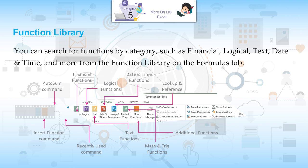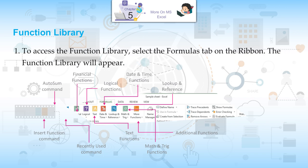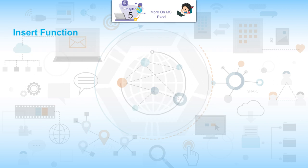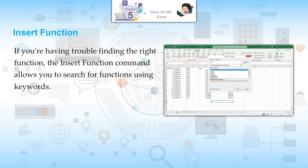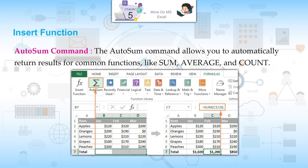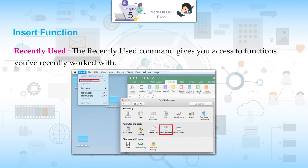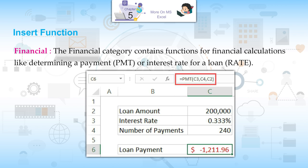To access the function library, select the Formulas tab on the ribbon and the function library will appear. Insert Function: If you are having trouble finding the right function, the Insert Function command allows you to search for functions using keywords. AutoSum command: allows you to automatically return results for common functions like SUM, AVERAGE, and COUNT. Recently Used: gives you access to functions you have recently worked with.